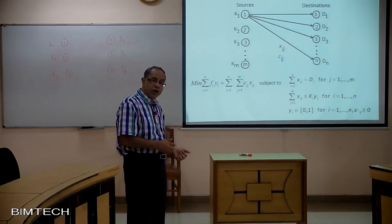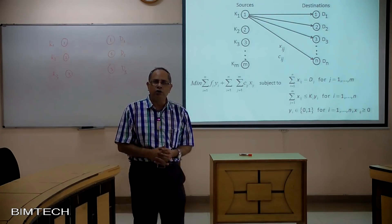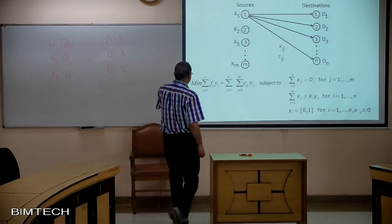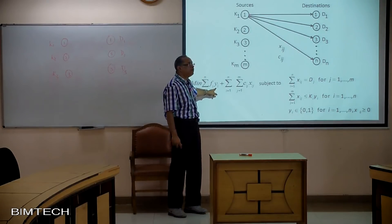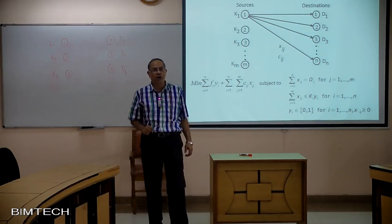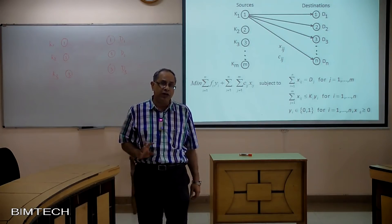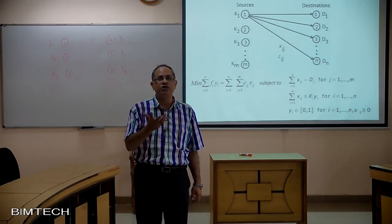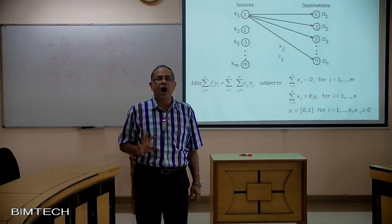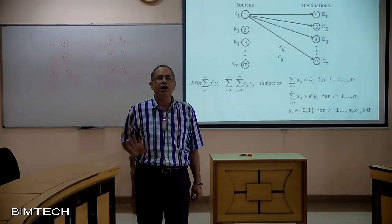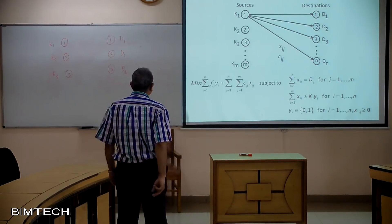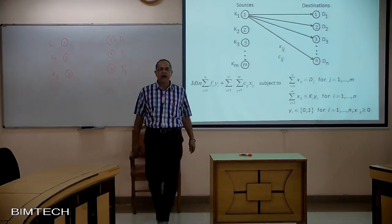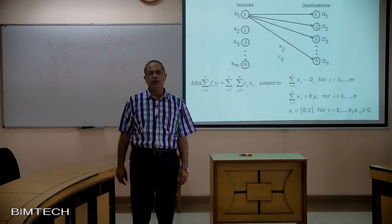But that is not the case any longer. In our context here, we are saying we can go ahead and close plants, and therefore Y is going to matter. The fixed cost must now be added because the fixed cost is F_I × Y_I, meaning each plant's fixed cost multiplied by Y for that plant. If the Y value becomes zero, F_I × Y_I for that plant will be zero, and we remove that fixed cost from the total cost — it is no longer a sunk cost. So we have introduced summation F_I Y_I added to the total variable cost.